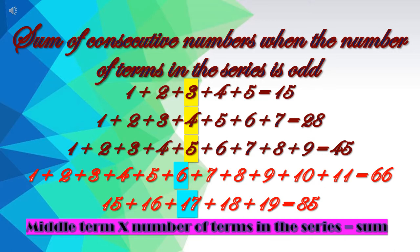In each series I have highlighted the middle number, and I have multiplied the middle number by the number of terms in the series. So in the first series I have taken 5 numbers, and I have multiplied the middle term, which is 3, by the number of terms.